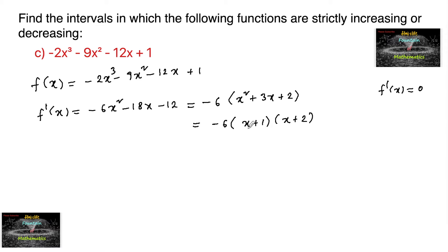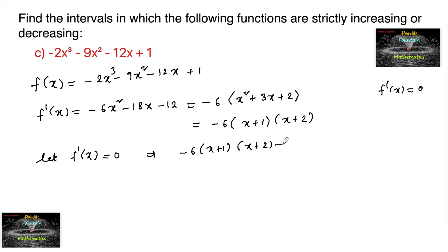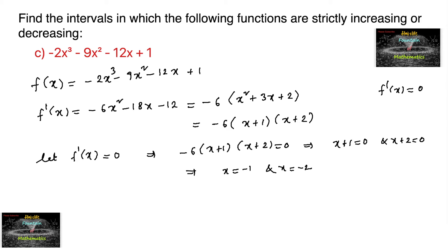So we get f'(x) = -6(x + 1)(x + 2). Now let f'(x) = 0 to find the intervals in which the function is decreasing or increasing. This gives us -6(x + 1)(x + 2) = 0, which implies x + 1 = 0 and x + 2 = 0, so x = -1 and x = -2. These two points will divide the number line.